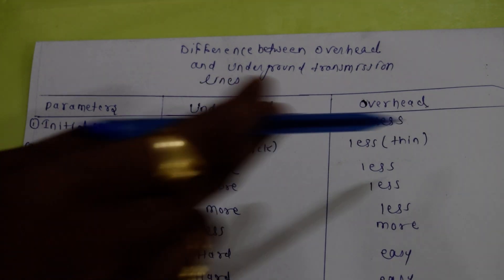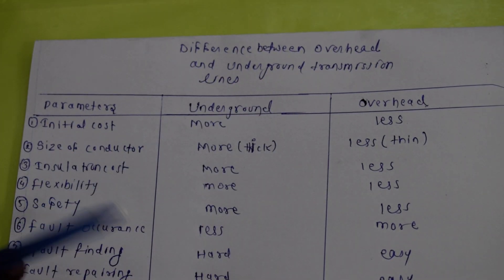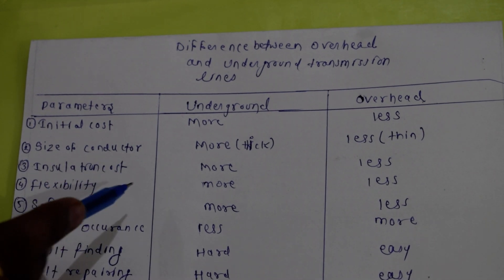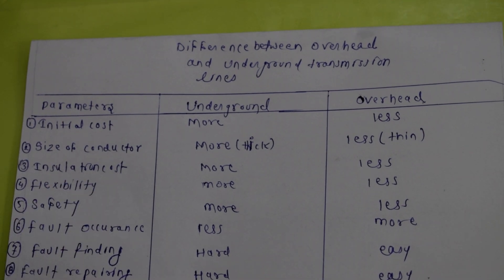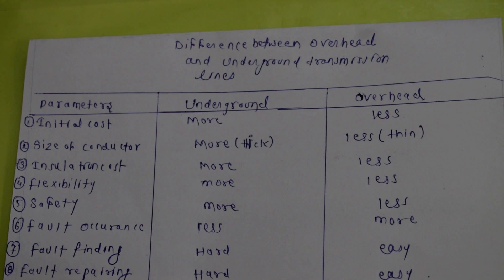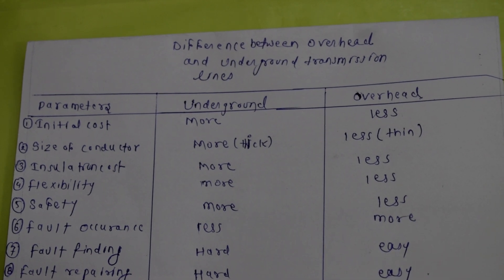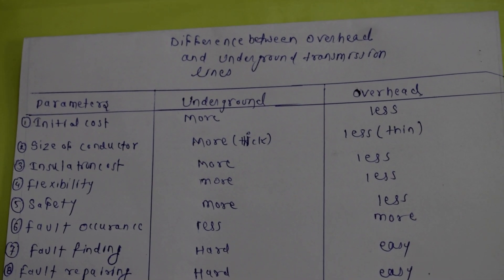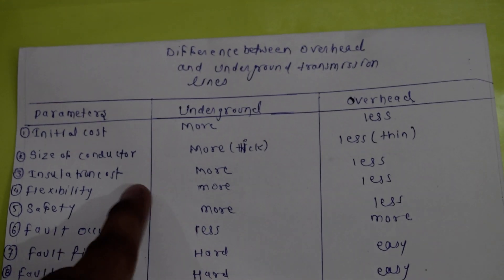The first point is the initial cost. When comparing underground versus overhead transmission lines, the initial cost of underground is much more compared to overhead. This is the first point.